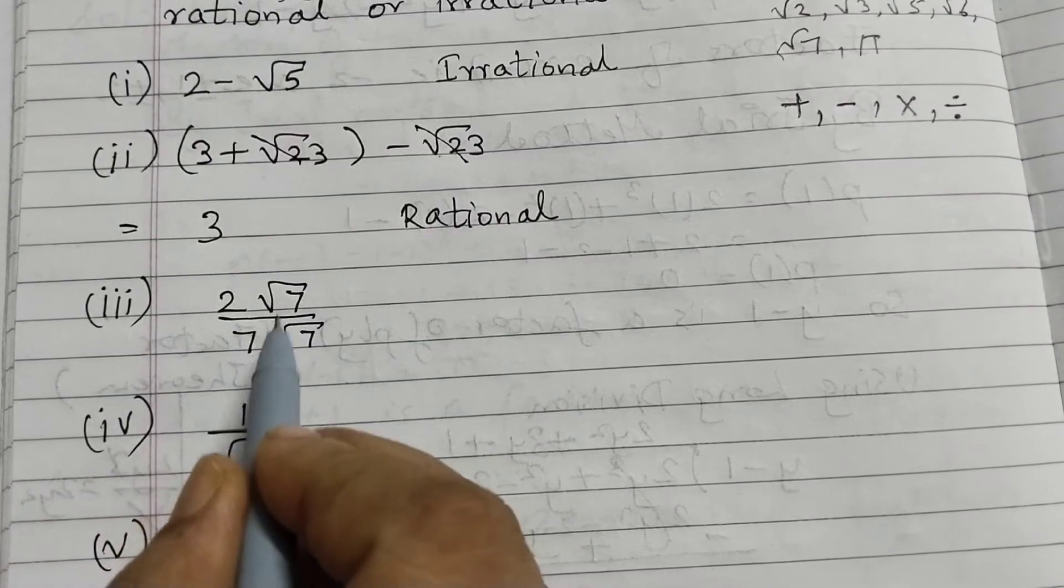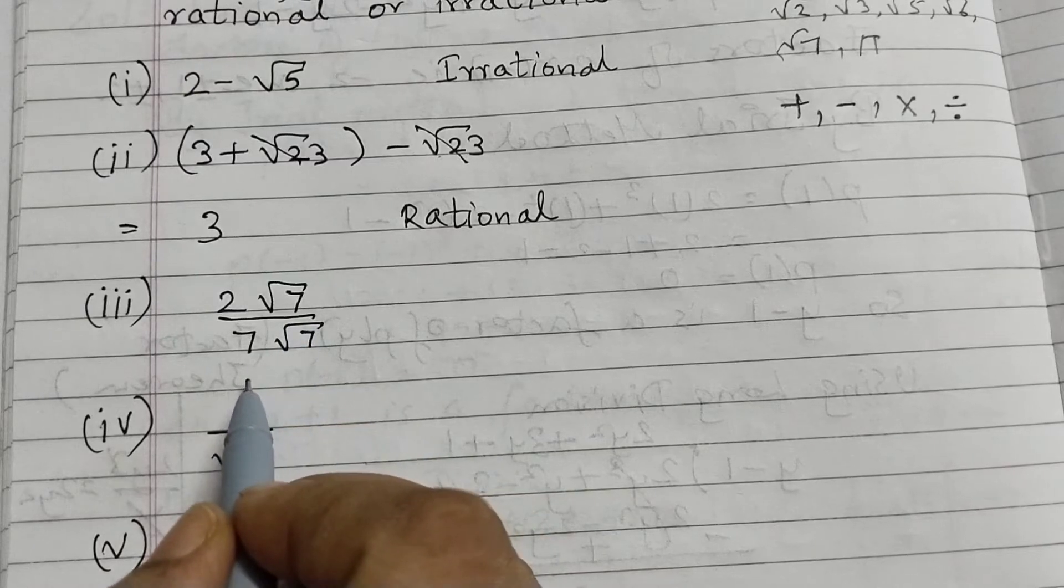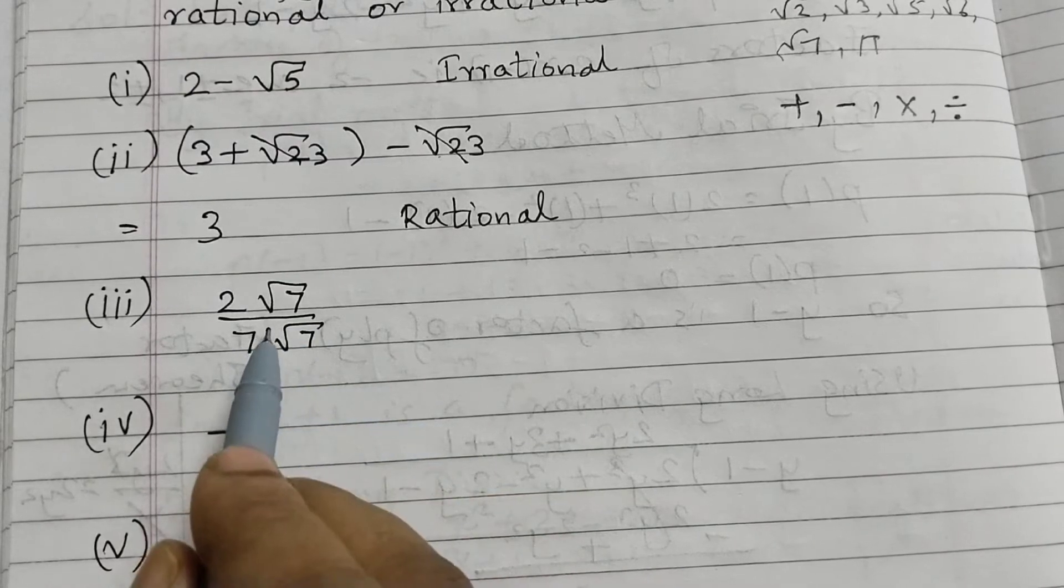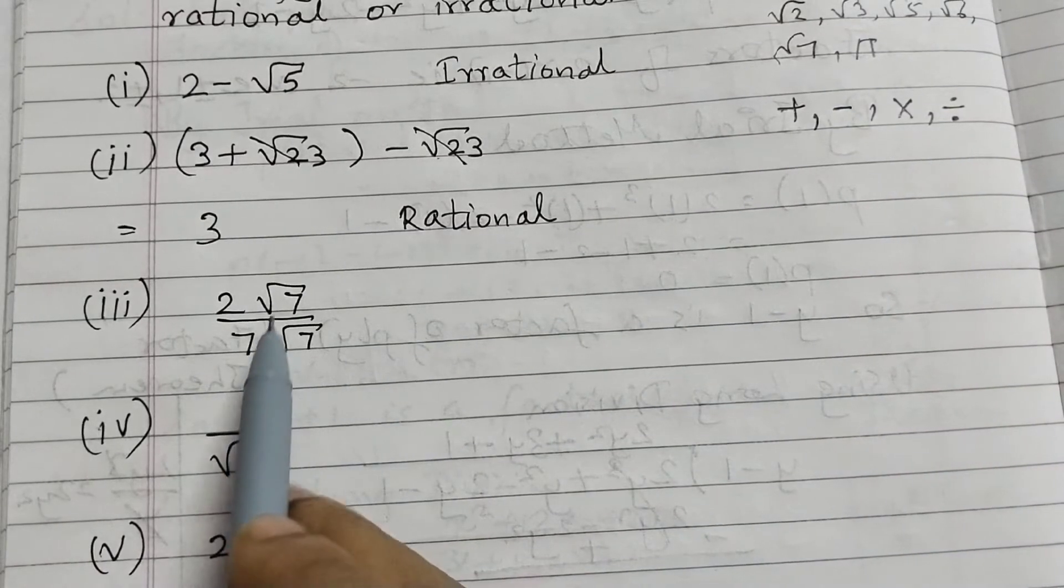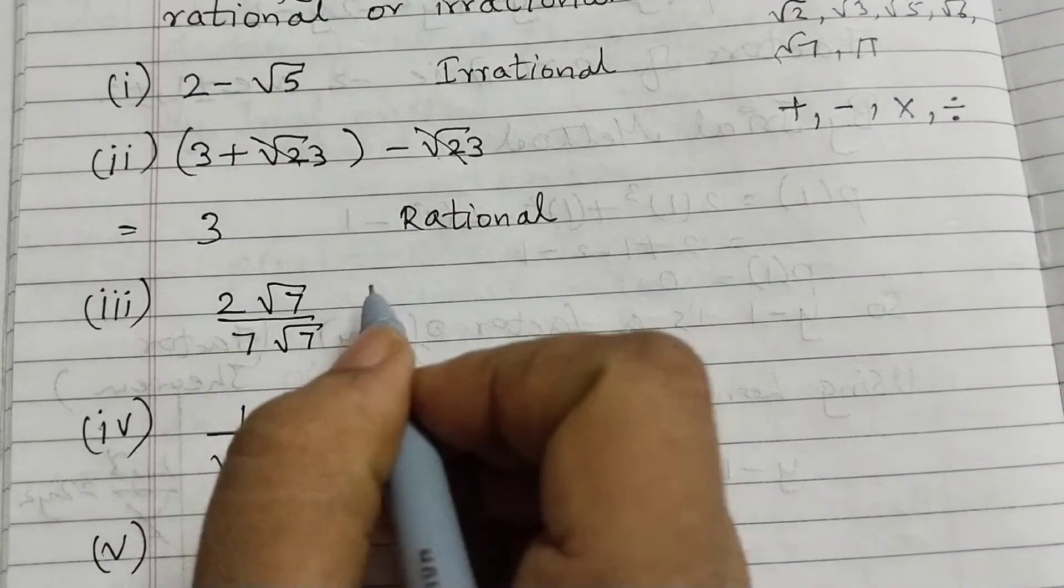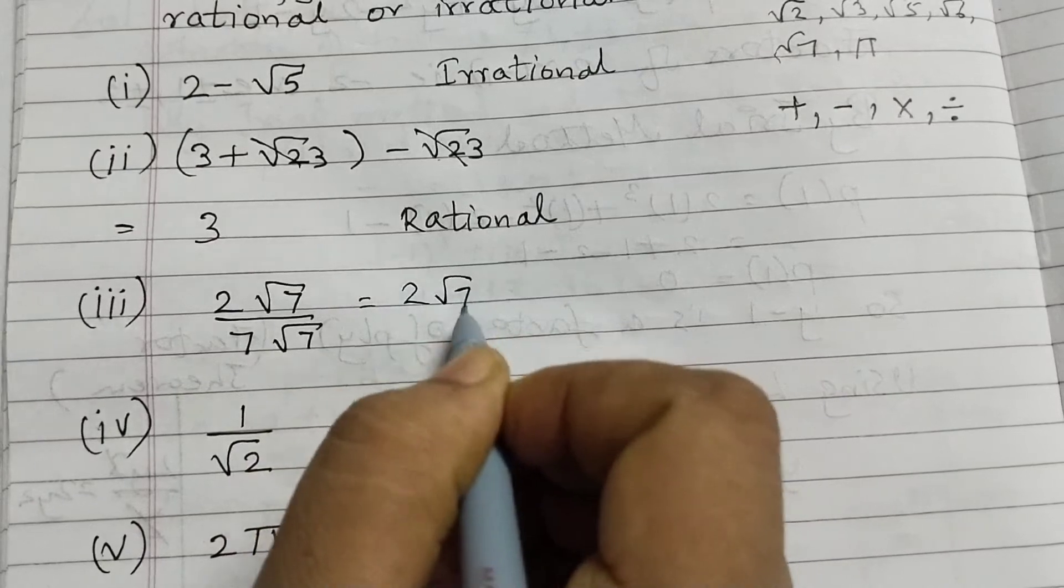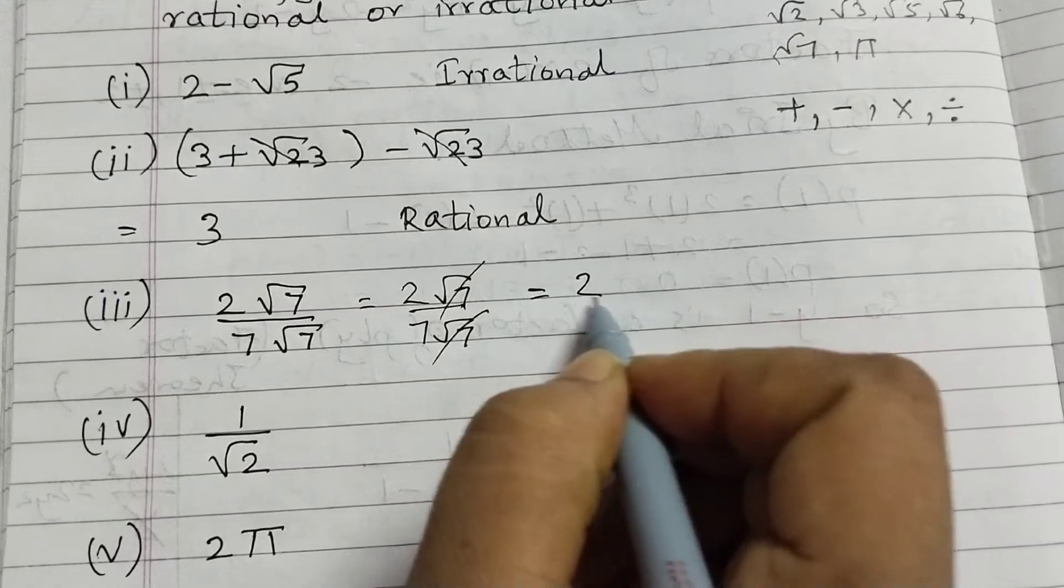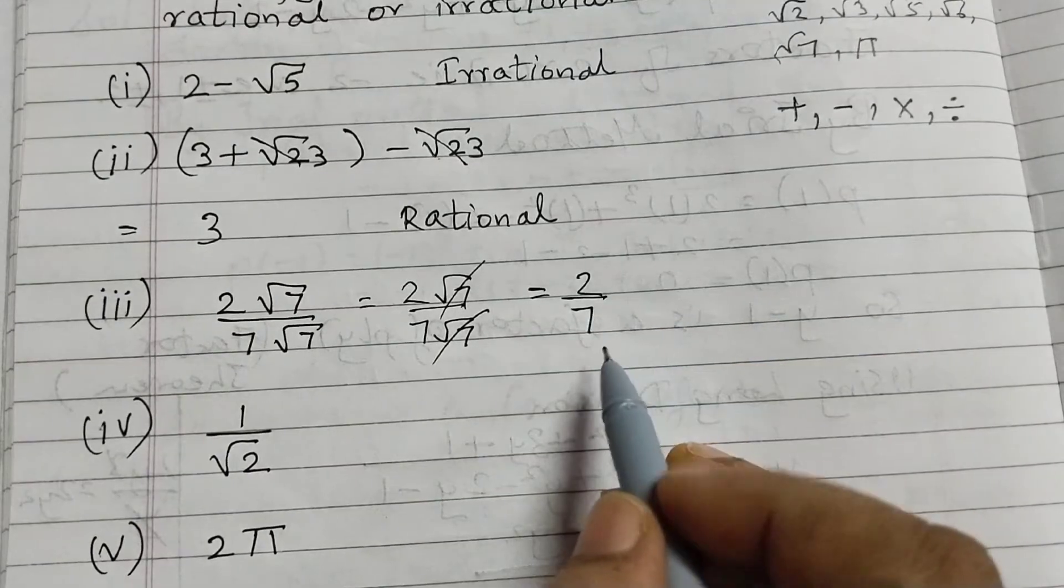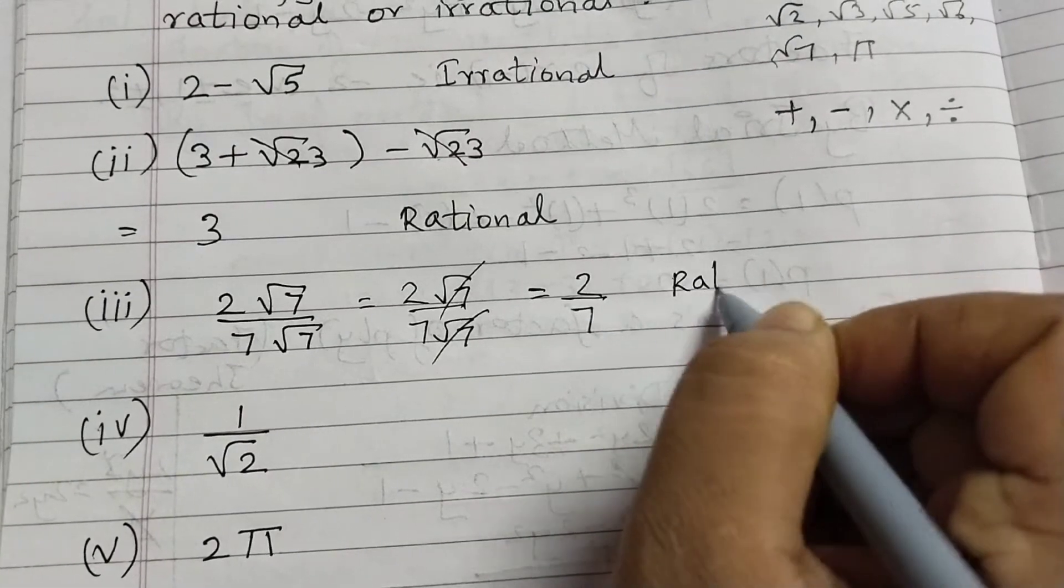Question number 3, 2 square root of 7 divided by 7 square root of 7. Square root of 7 is irrational. But then we have it in numerator and denominator. So what we can do is we can just cancel it out. We are left with 2 by 7 is in p by q form. So this is a rational number.